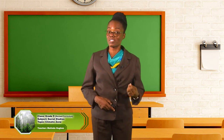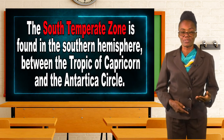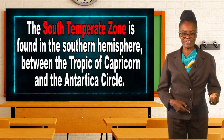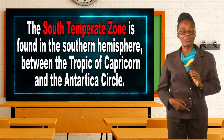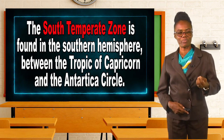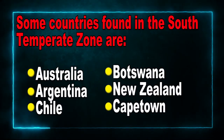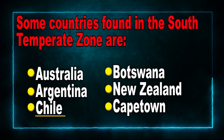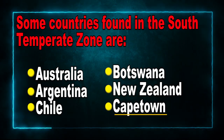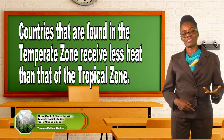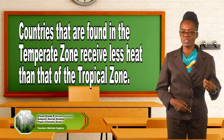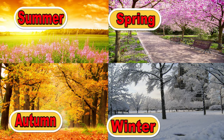Next, we will look at the south temperate zone. The south temperate zone is found in the southern hemisphere between the Tropic of Capricorn and the Antarctica Circle. Some countries found in the south temperate zone are Australia, Argentina, Chile, Botswana, New Zealand, and Cape Town. Countries found in the temperate zone receive less heat than those of the tropical zone. These countries are very cool and as a result they experience the four seasons: summer, winter, autumn, and spring.